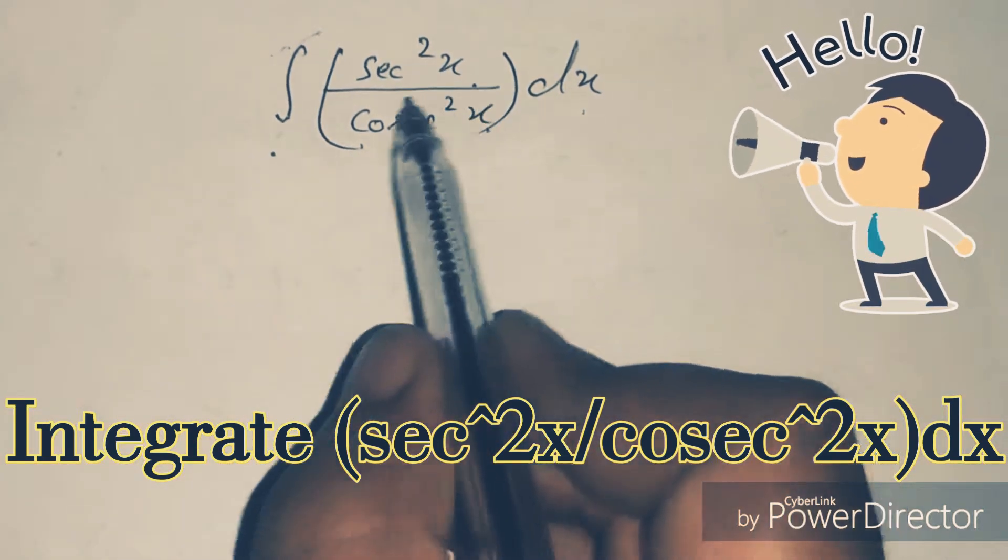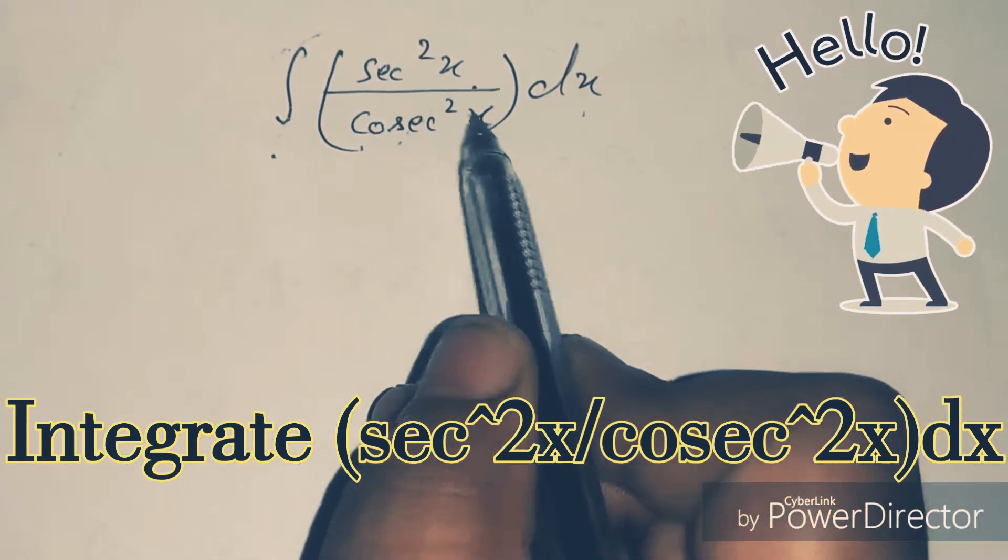The question is: integrate sec²x by cosec²x dx.